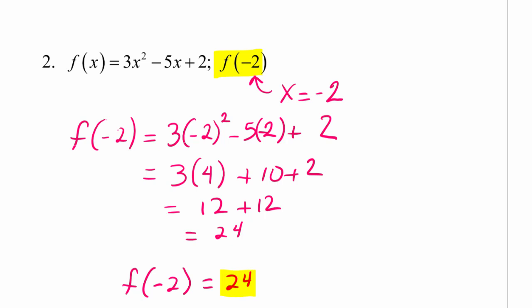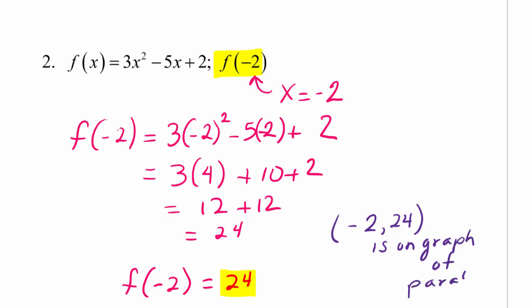The answer when evaluating f of negative 2 is 24. To tie it into the graph for future work, remember that this function notation is giving you quite a bit of information — it tells you that the ordered pair (negative 2, 24) is on the graph of the parabola. But as you do your homework, the 24 is what they're looking for.